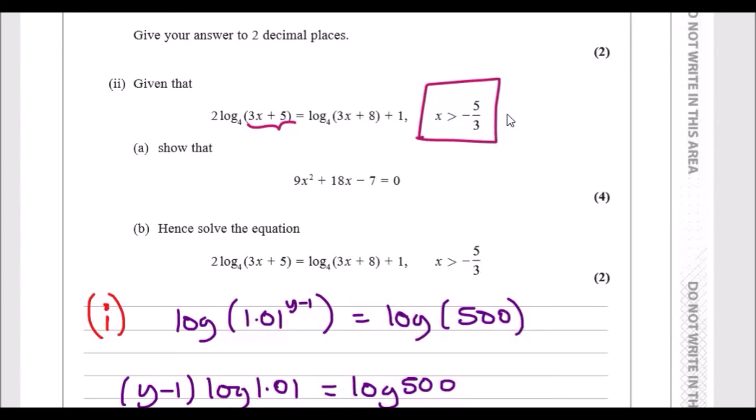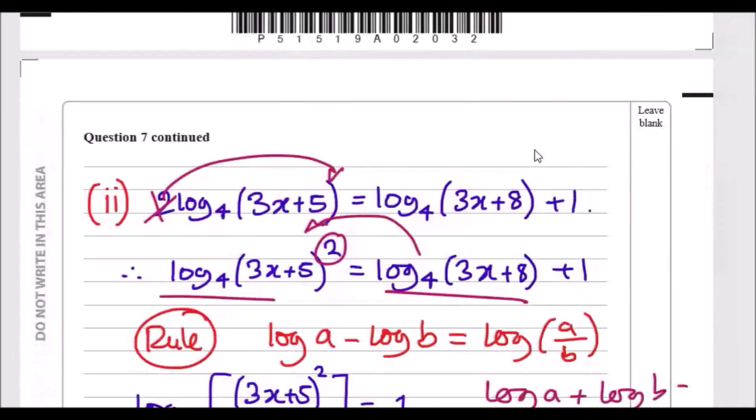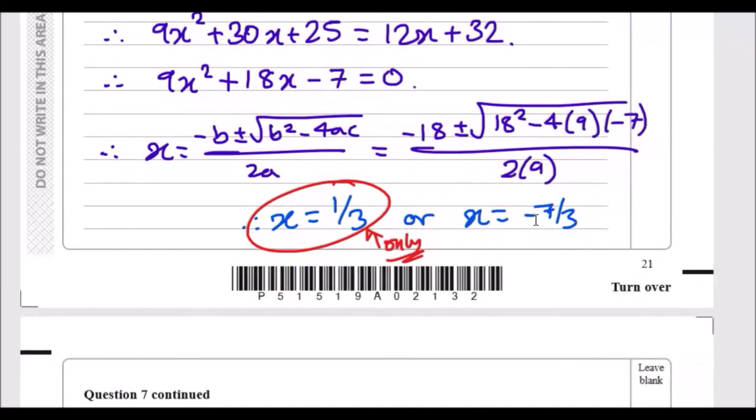Same with this one here, so that's why they put this in to impose a limit. Now looking at this value, for x to be greater than -5/3, well -7/3 is slightly less, so that's why we only have 1/3, and that's it.